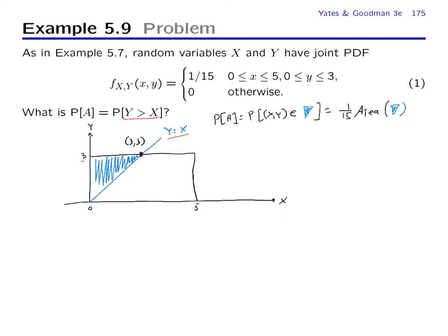P(A) is equal to 1/15 times the area of that triangle. The area of that triangle is 1/15 times one-half times the base which is 3 times the height which is 3, and so it's equal to 9 over 30, which equals 0.3.